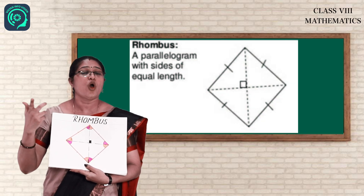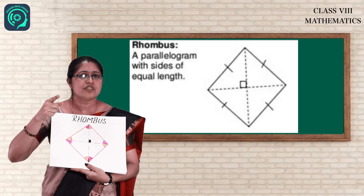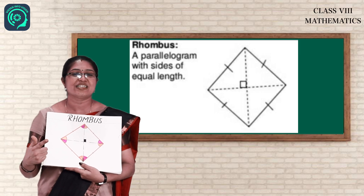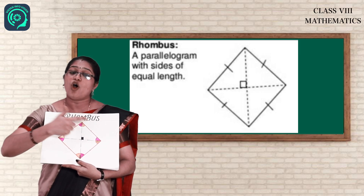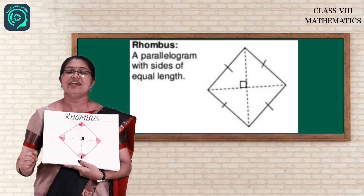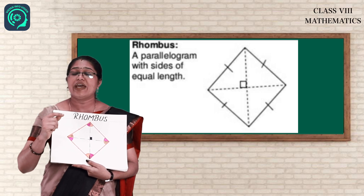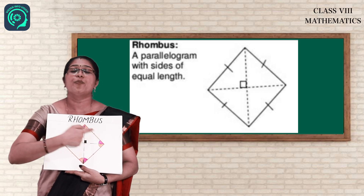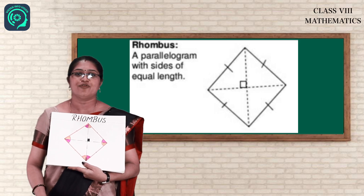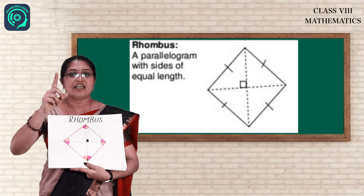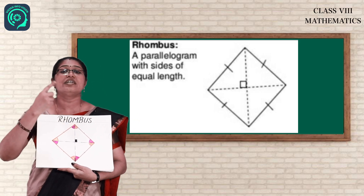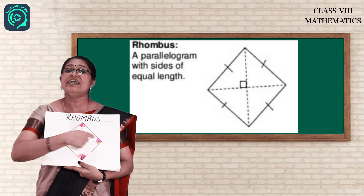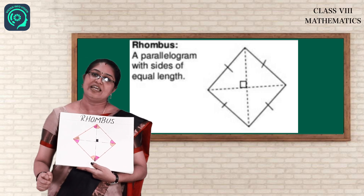The next quadrilateral is rhombus. Are you confused that it is a square? No, children, it is rhombus. All the sides are the same, but the only difference is that only the opposite angles are equal. For a square, all angles are 90 degrees, but for a rhombus only opposite angles are equal. All sides are equal and opposite angles are equal. What about the diagonals? Diagonals intersect perpendicularly.